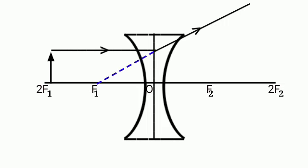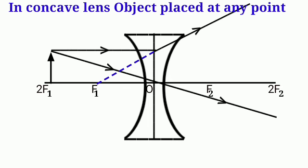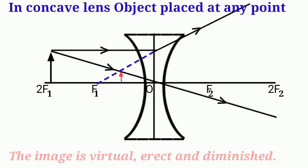And the second ray passing through optical center will be going without changing any direction. It will not be diverted. And see, in this place, the two rays are intersecting each other - one real ray and the other imaginary ray.